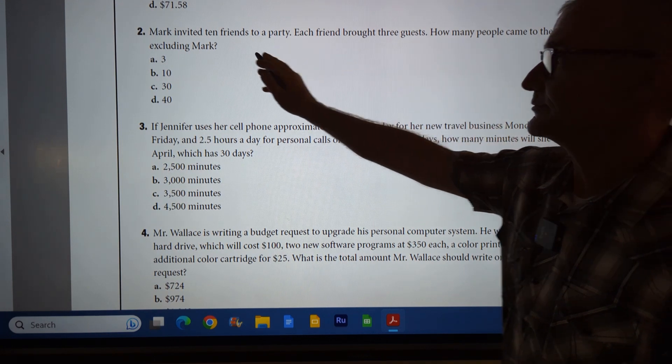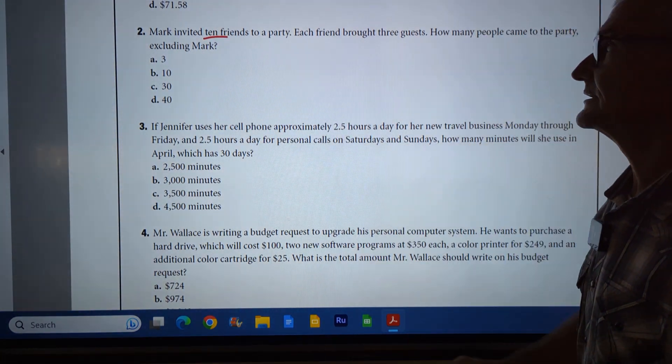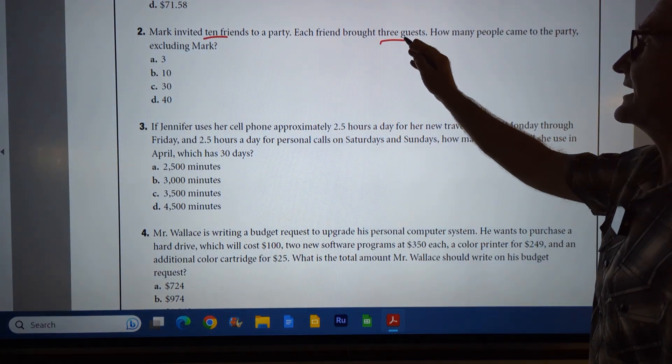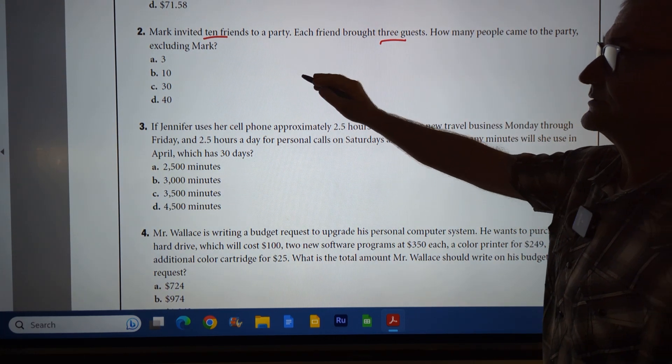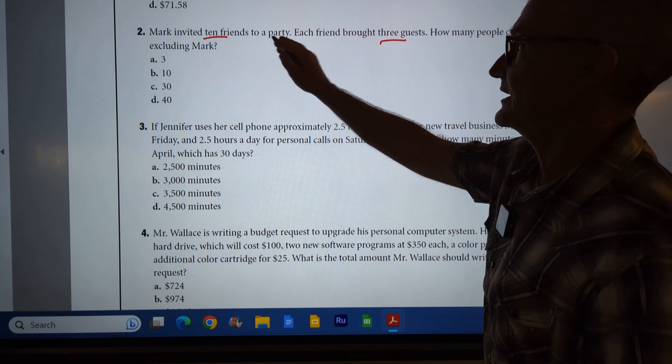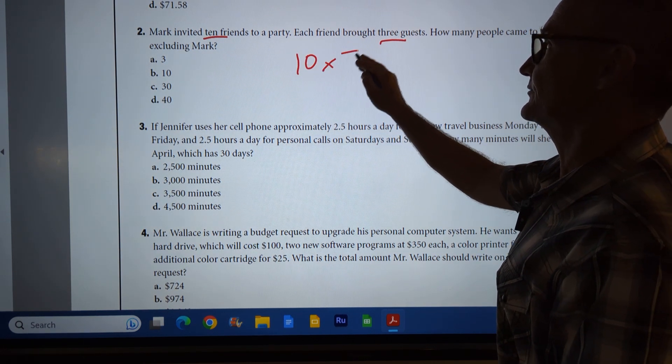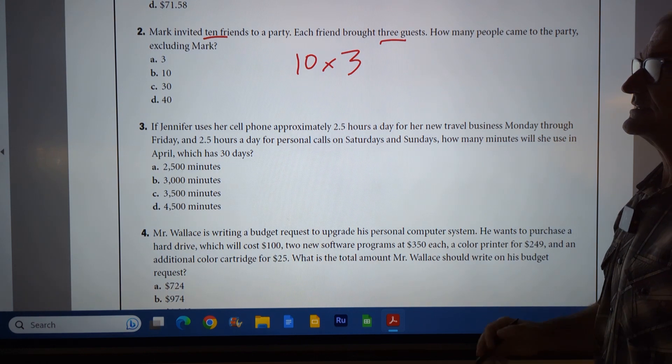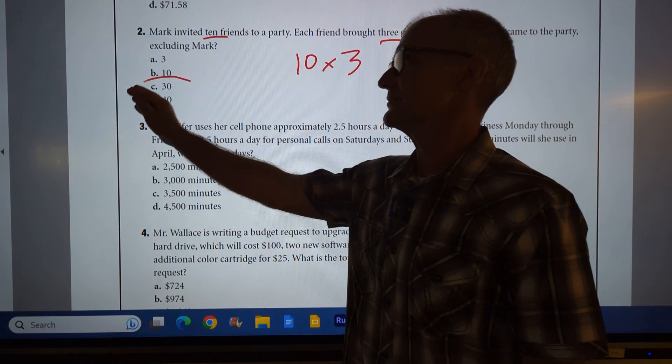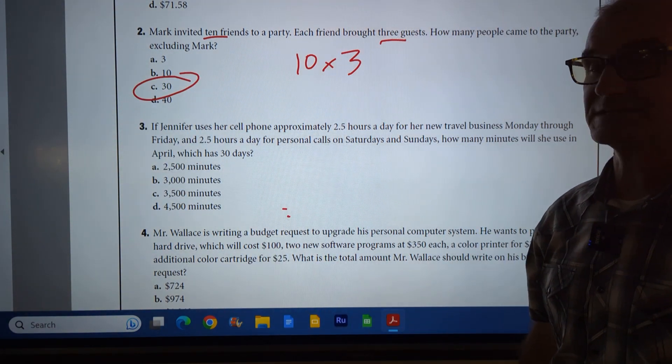Mark invited 10 friends to a party, so it's written out as a word. Each friend brought three guests. How many people came to the party? So I have 10 friends, and they each brought three guests. So I'm going to be multiplying. 10 times 3 is 30. Correct answer, answer C.